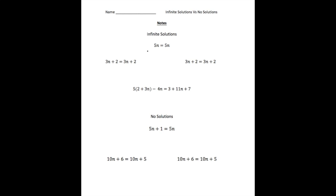Take a look at the first problem here. This is an example of an infinite solution equation. Remember, n is a number. If you notice, this side of the equation equals this side — 5n is the exact same thing as 5n over here. So no matter what n is, this side is going to equal this side. If n was 3, well, 5 times 3 is 15, and 5 times 3 is 15. So no matter what n is — it could be a million, it could be 4 tenths, it could be a fraction — the number of solutions is infinite.